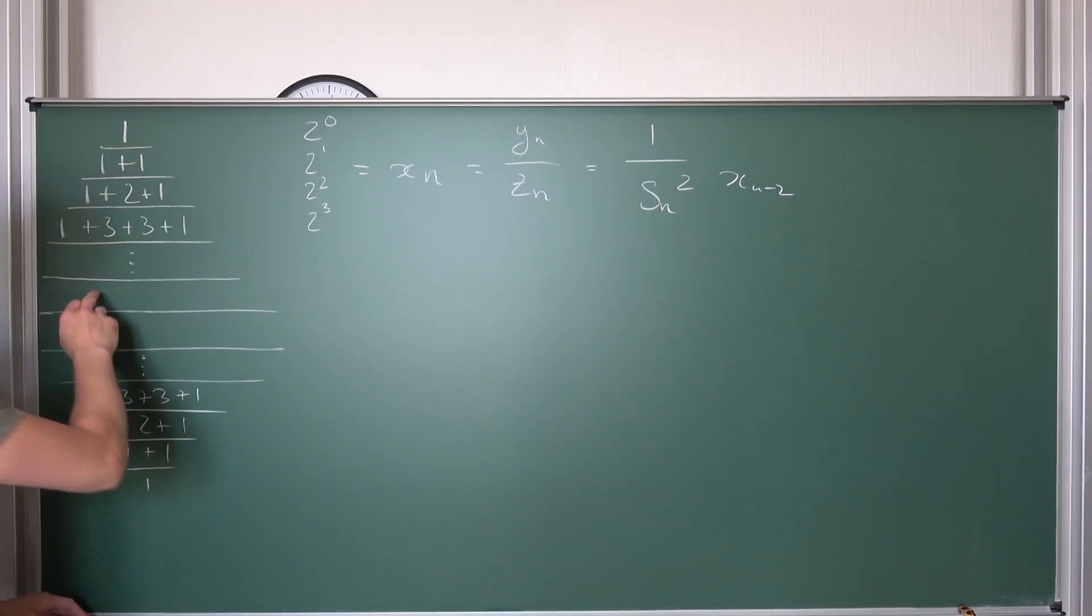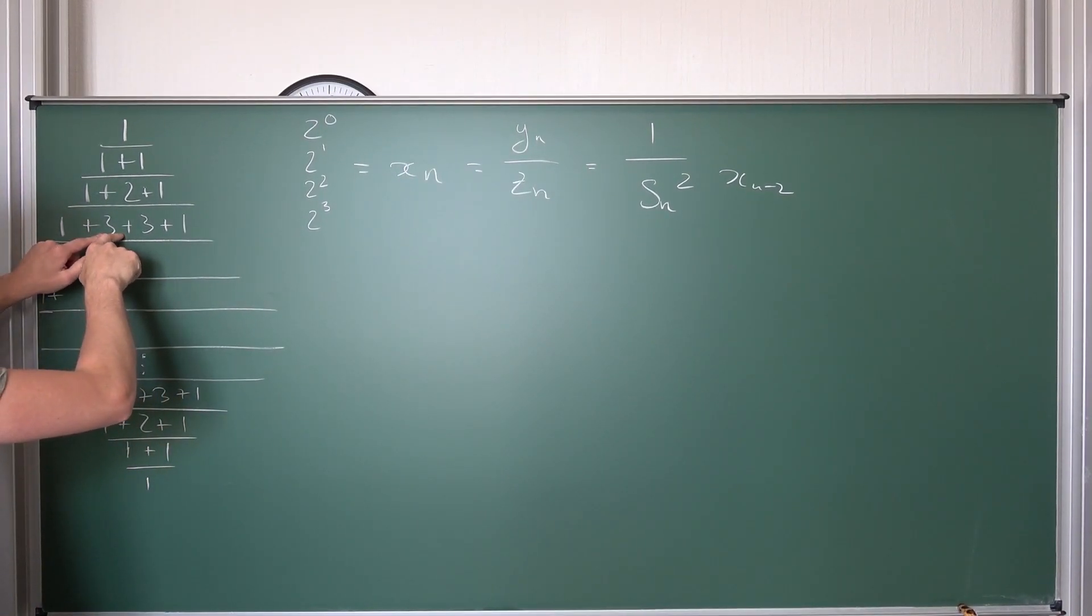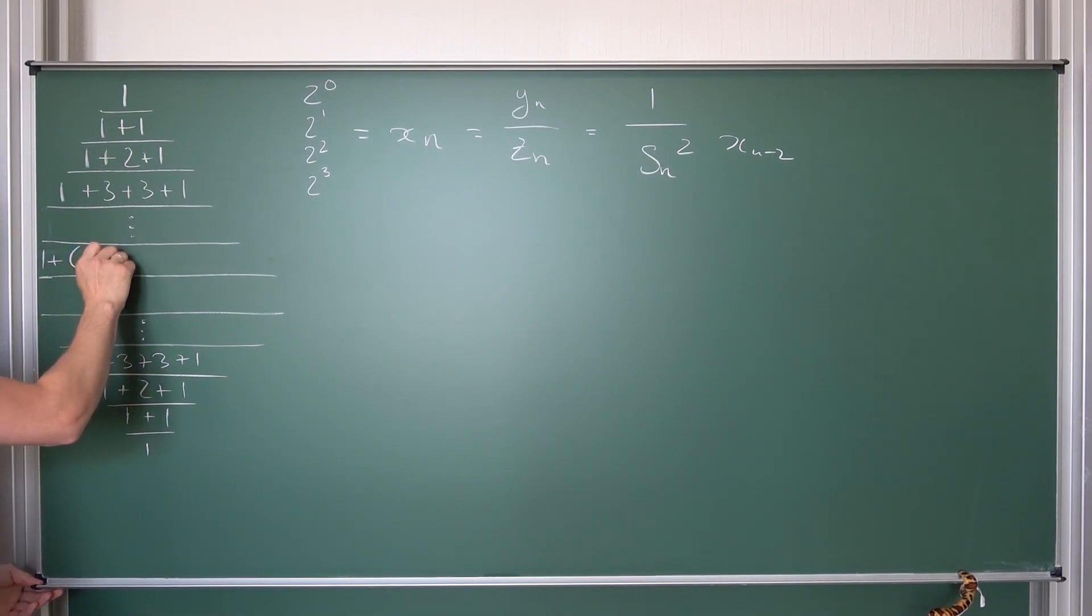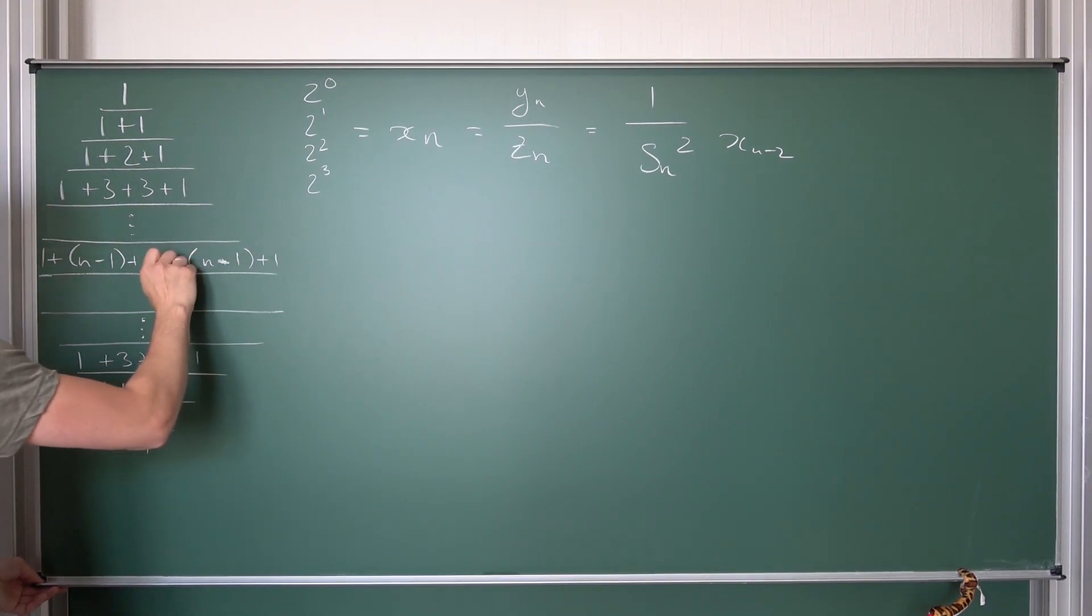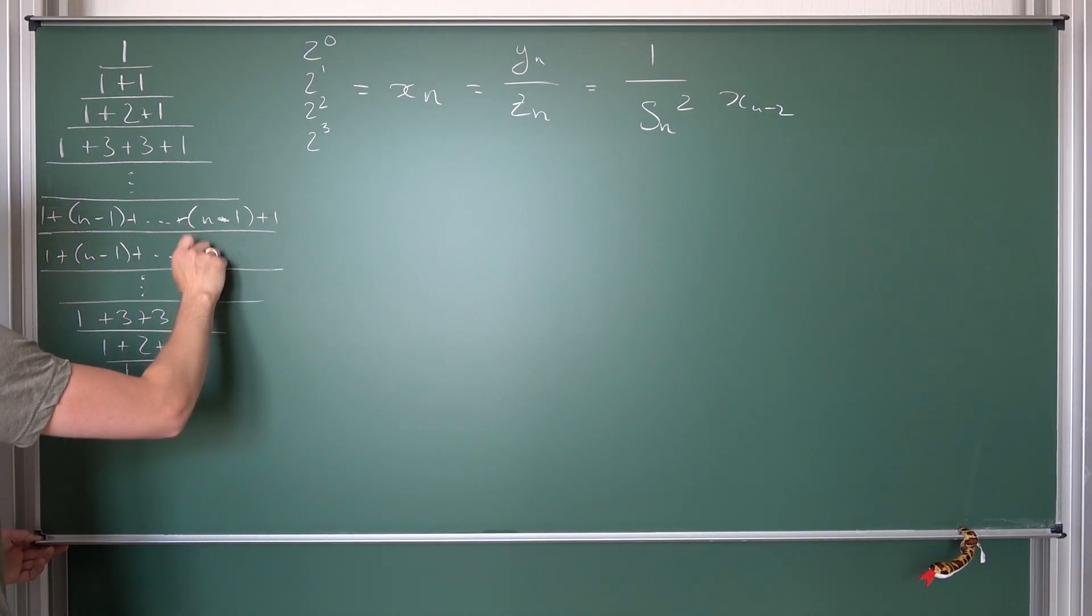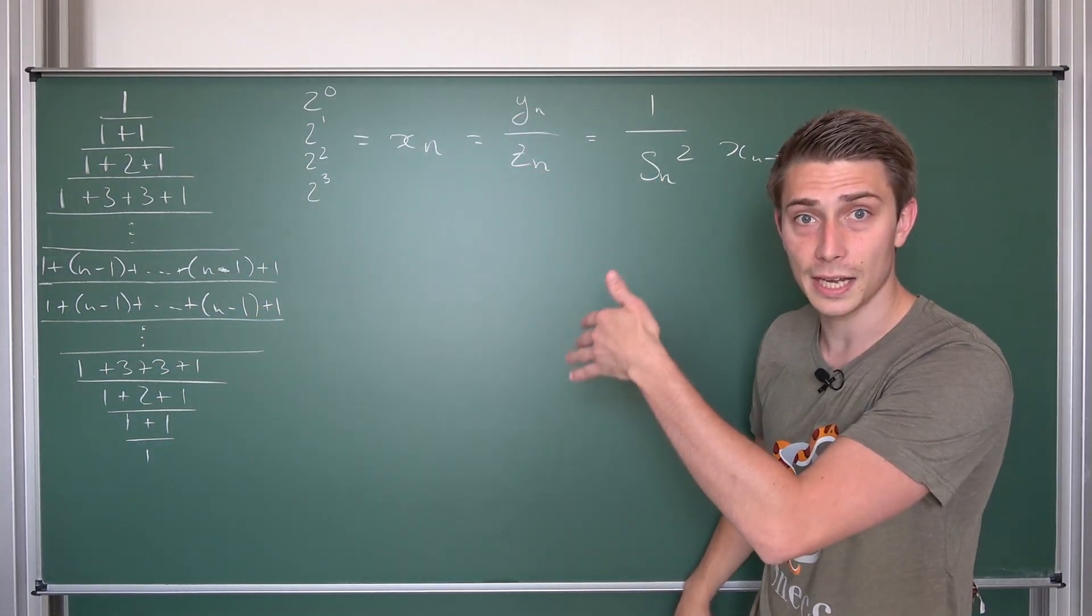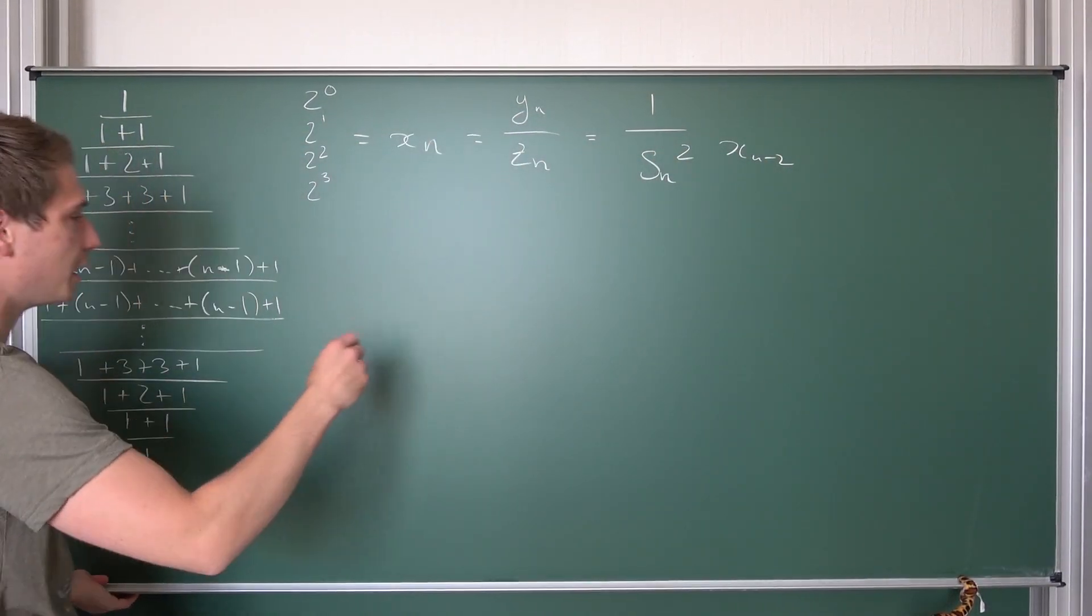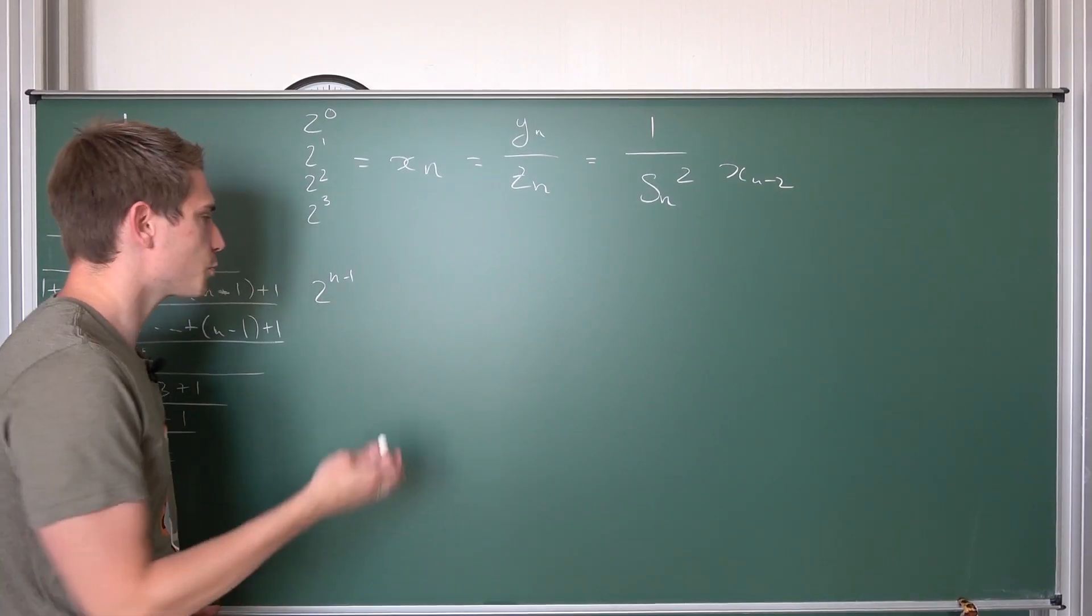This is just a consequence from this index shift that we are doing here. Meaning, on our nth row, we are going to get something of this sort, 1 plus, here we had the fourth row, we had a 3 here as the next number. We had the third row, we had a 2, meaning it's always n minus 1 plus dot dot dot up until n minus 1 plus 1. And same should be here, 1 plus n minus 1 plus dot dot dot plus n minus 1 plus 1. This is what the diamond is going to look like and the nth row, the summation of the nth row is going to be 2 to the n minus 1th power. And this basically settles it already.